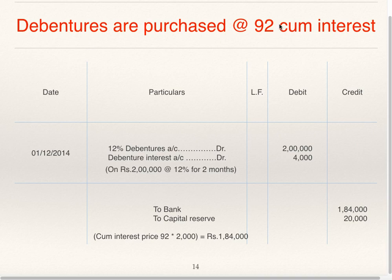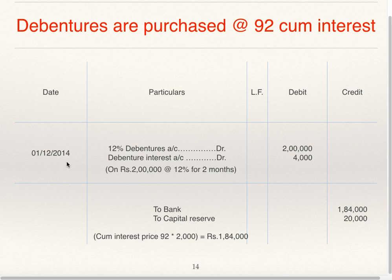Now if debentures are purchased at 92 cum-interest — cum-interest means including interest, so the price of 92 includes interest. Entry: 12% debentures account debit 2 lakhs (2000 into 100); debenture interest account debit 4000 (on 2 lakhs at 12% for 2 months — date of transaction is 1st December and last payment was 30th September, so October and November, 2 months interest is due). As this is cum-interest, the price already includes interest, so to bank 1 lakh 84,000 (92 into 2000), and the balance is transferred to capital reserve account.